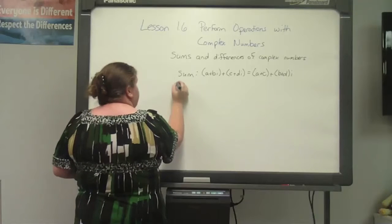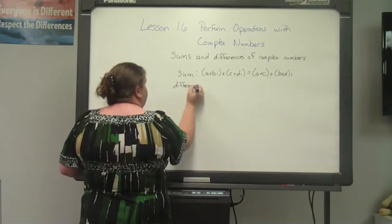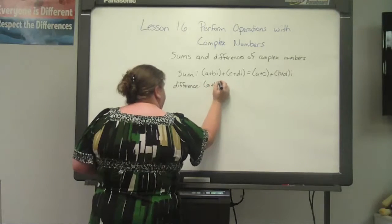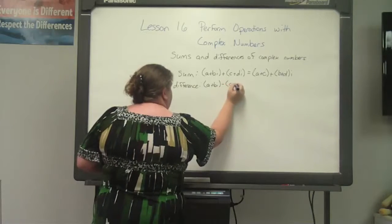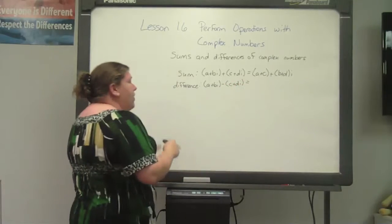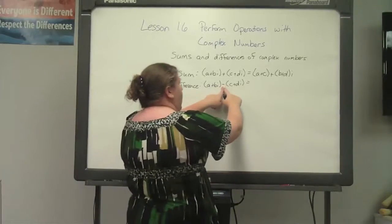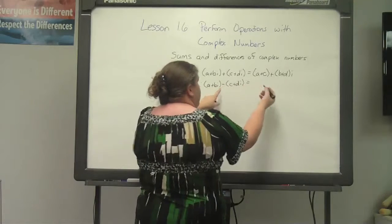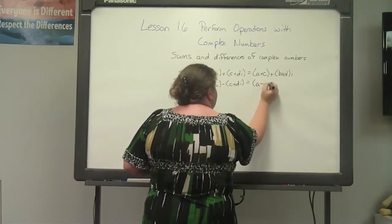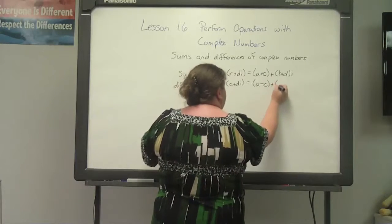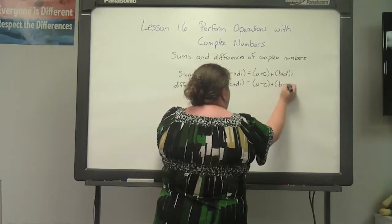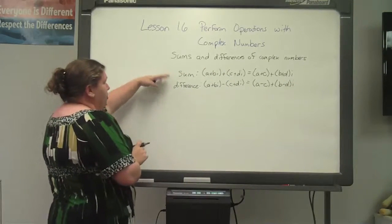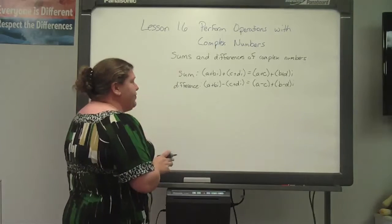For the difference: (a + bi) minus (c + di) — remember that the negative sign gets distributed to c and di. Therefore, we have (a minus c) plus (b minus d)i. Those are the two rules for sums and differences of complex numbers.